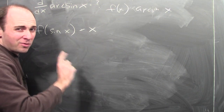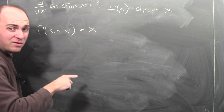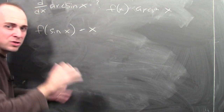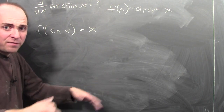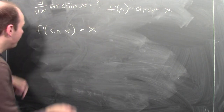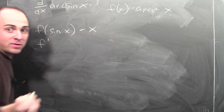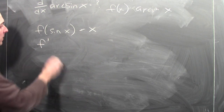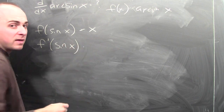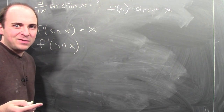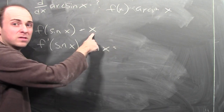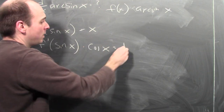If f were differentiable, I could apply the chain rule and differentiate both sides. So let's just do that, assuming that f is differentiable. If I differentiate f, I get some mystery derivative — I don't know what it is yet, I'm calling it f prime — at the inside, which is sine x, times the derivative of the inside, which is cosine x. And this is equal to the derivative of the other side, which is 1.